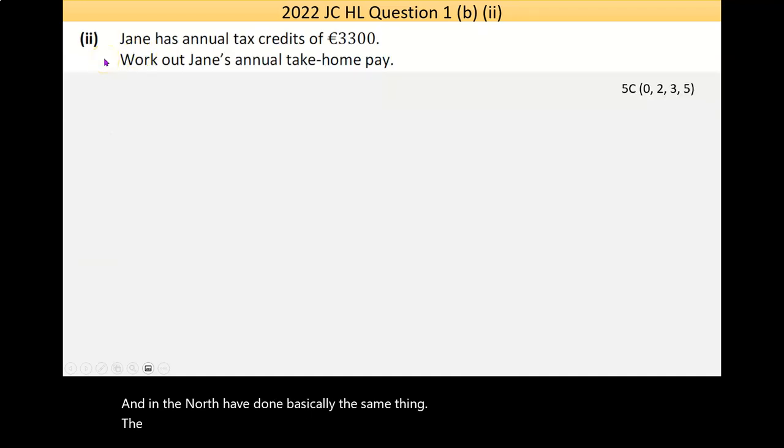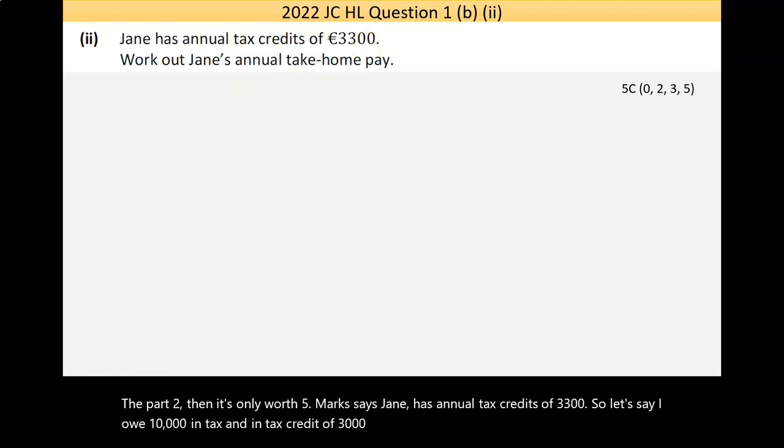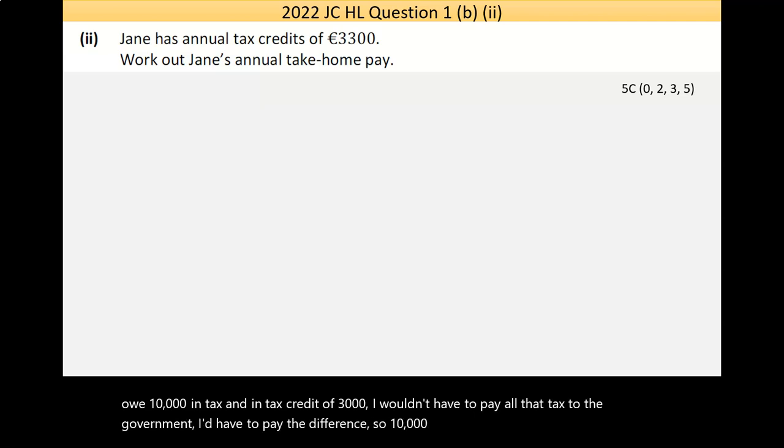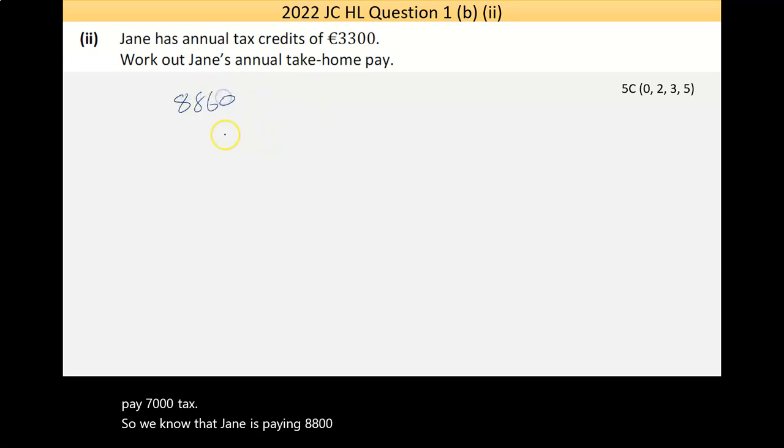Now part two, then, it's only worth five marks. Jane has annual tax credits of 3,300. So let's say I owe 10,000 in tax, and I had a tax credit of 3,000. I wouldn't have to pay all that tax to the government. I'd have to pay the difference. So 10,000 take away 3,000 would be I'd have to pay 7,000 tax. So we know that Jane is paying 8,860 plus the 4,680 from the previous part.